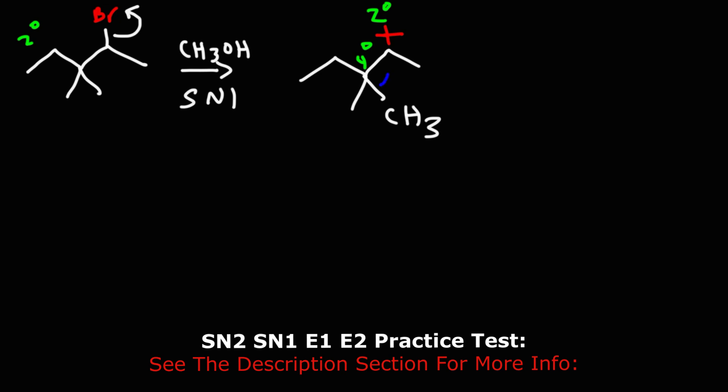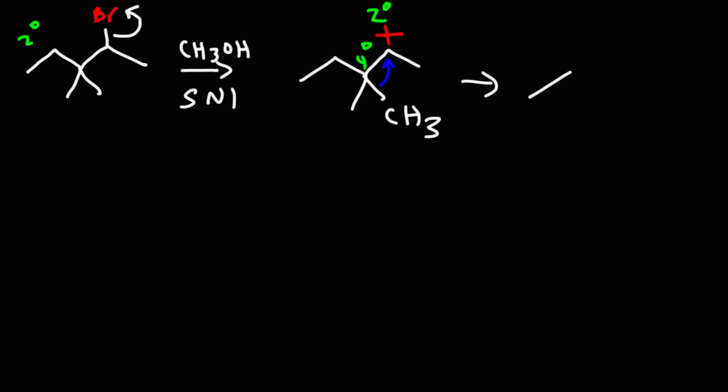This methyl group is going to glide to this carbocation. And so, the entire carbon structure of this molecule is going to change. So, here's the new methyl group. And this carbon lost the bond. It lost the methyl group. So, it's going to have the positive charge. So, what we now have is a tertiary carbocation.